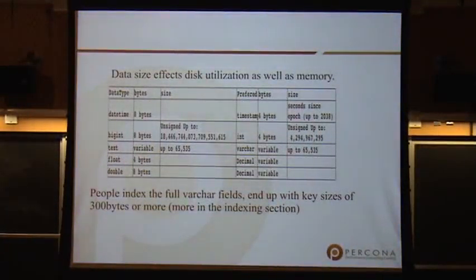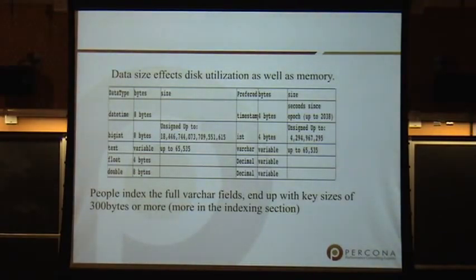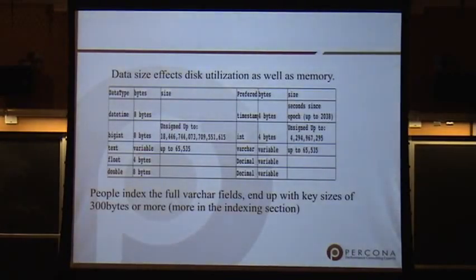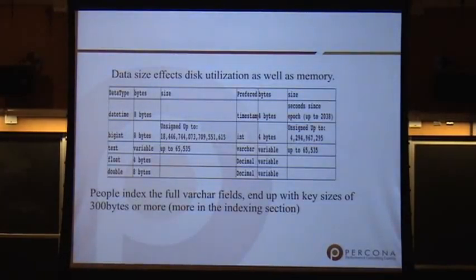Here are some suggestions. For example, DATETIME is very popular but it's 8 bytes — if you use DATE and TIME as separate columns, each is 3 bytes, so 6 total instead of 8. BIGINTs are huge numbers; using unsigned INT gets you up to 4.3 billion, saving 4 bytes. We already talked about TEXT versus VARCHAR.